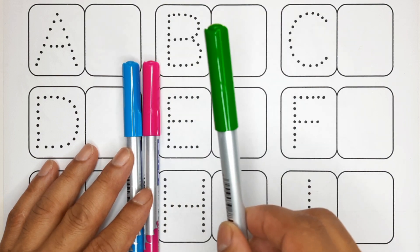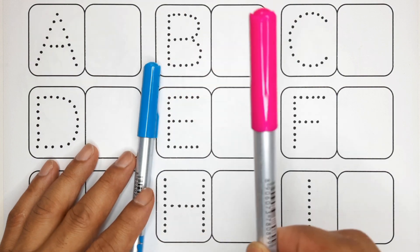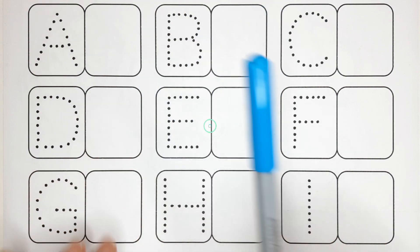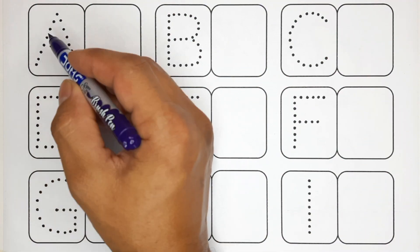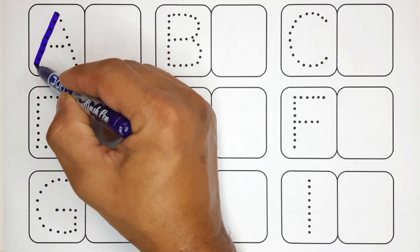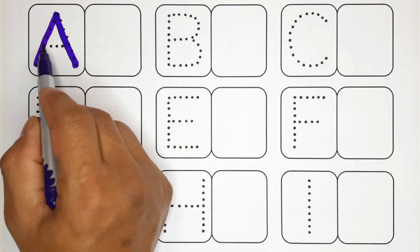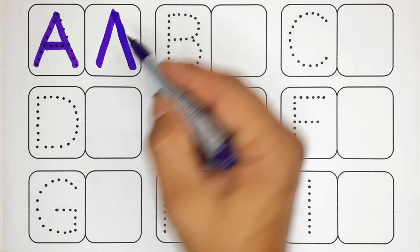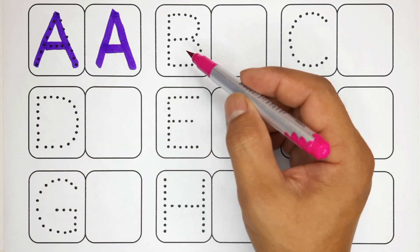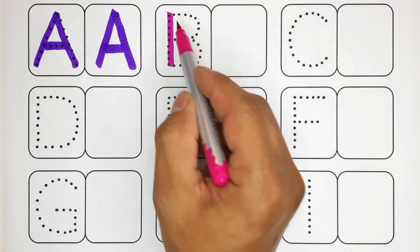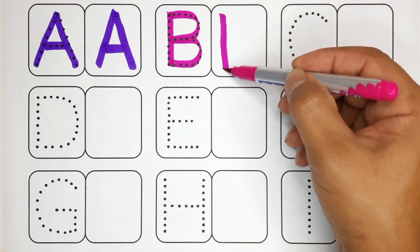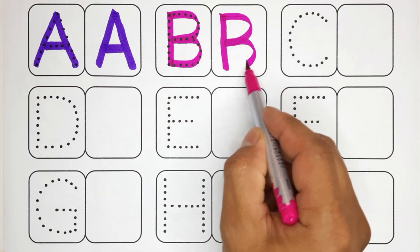Green color, pink color, blue color. A, A for ant, A for ant. B, B for balloon, B for balloon.